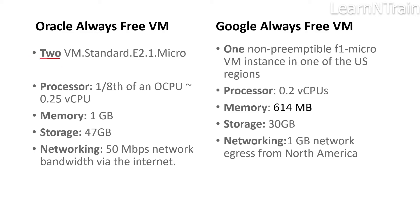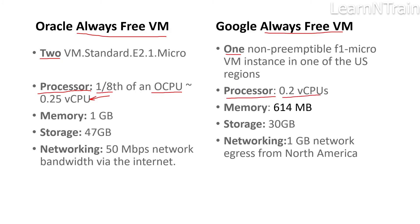The first difference is that Oracle is providing two virtual machines whereas Google is providing only one in their always free tier. Regarding processors, Oracle is providing one-eighth of an OCPU, which in Oracle terms is equivalent to two virtual CPUs, so they are effectively providing 0.25 vCPUs. Google is providing a processor worth 0.2 virtual CPUs.